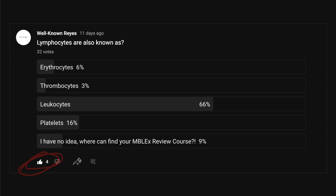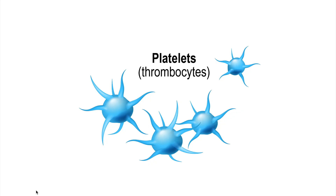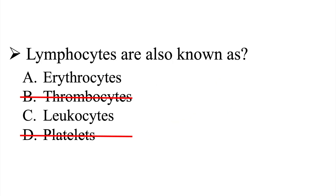Thank you to the four people who liked this post. Let's dive into this information and see which is the correct answer. Let's start with platelets — platelets are also known as thrombocytes, and they are responsible for coagulation, preventing us from bleeding out. If we get a cut, they clot that area. So that is not a lymphocyte, and we can get rid of B and D. Thrombocytes and platelets practically mean the same thing, leaving us with a 50-50 chance of picking either erythrocytes or leukocytes.